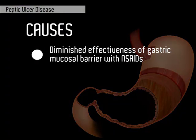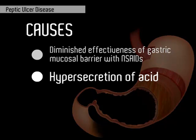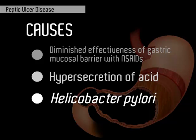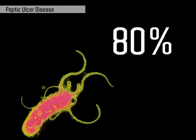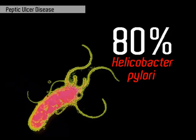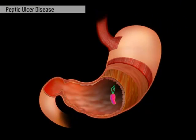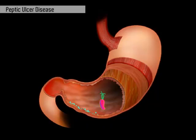Peptic ulcer disease is caused by diminished effectiveness of the gastric mucosal barrier from improper use of non-steroidal anti-inflammatory drugs (NSAIDs), hypersecretion of acid, and Helicobacter pylori infection. 80% of cases are caused by H. pylori, which secretes its own buffer to counteract gastric acid, and produces proteins that liquefy the gastric mucosal barrier and evoke immunological responses, contributing to mucosal erosion and ulcer formation.